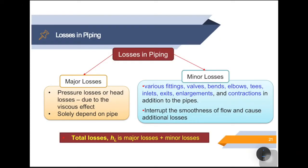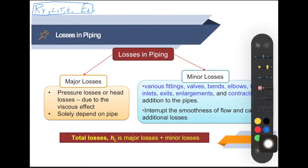So students, we are going to move to our next section of this chapter, which is the losses in piping. We have already covered Reynolds number, how to calculate Reynolds number, what is laminar, what is transitional, what is turbulent flow, and we have covered what is the entrance region and how to calculate it. So now that we know about these concepts, we are going to move to losses in piping.